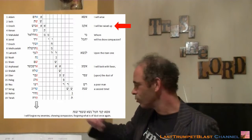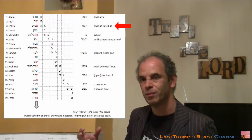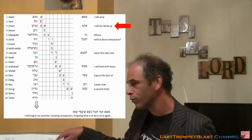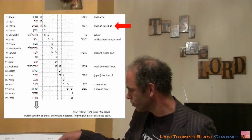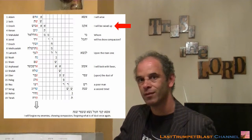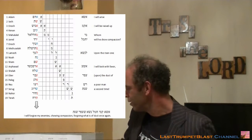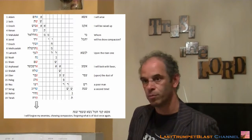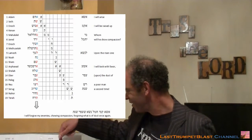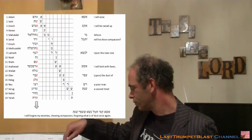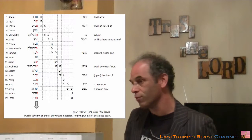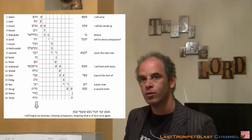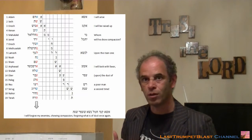Which is the second word. But you see, you get different words now, because we use the last character of one word as the first character of the next word. And so it goes all the time. That is what is actually happening here. And so then it reads: 'I will arise. I will be raised up, resurrected. Whom will he show compassion? Upon the risen one, I will look with favor. Upon the dust of a poor man a second time.' Here we see that 'I' is God speaking.